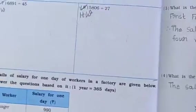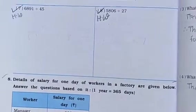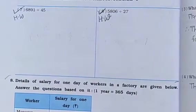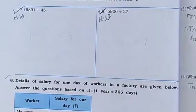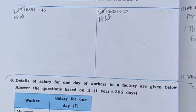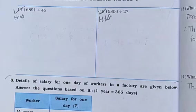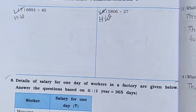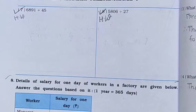Same type — question number seven and eight, do in your homework. So today's class we are doing only here. Next class we will cover other questions in this chapter. If you have any questions, ask me. Write these sums in your workbook and send me pictures.